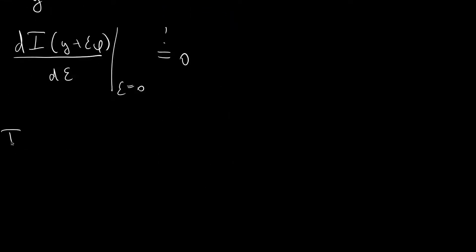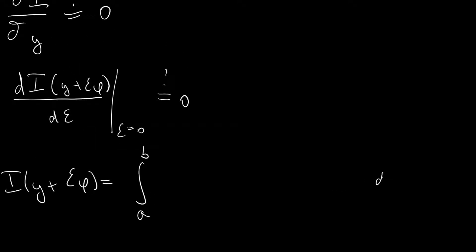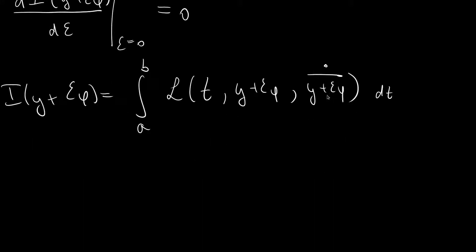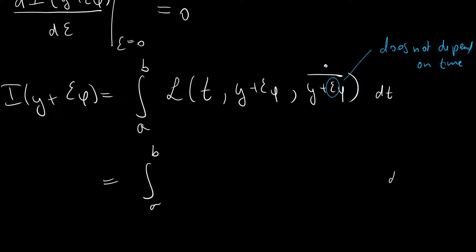Let us do this step by step. We first write the functional with augmented input: the integral from a to b over L, where t stays unchanged, but y is replaced by y plus ε·φ, and y' is replaced by the temporal derivative of y plus ε·φ. Since ε is a scalar independent of t, the derivative is straightforward, giving us the integral from a to b of L(t, y + ε·φ, y' + ε·φ') dt.